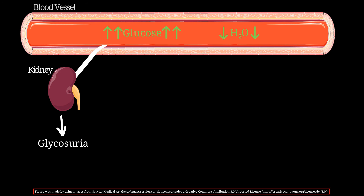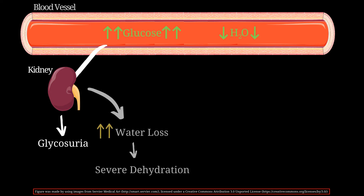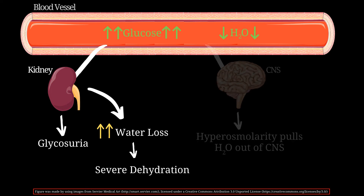Now let's look at the symptoms seen in hyperosmolar hyperglycemic state. Glucose gets filtered out by the kidneys into the urine, causing glycosuria. On its way out, glucose pulls water with it, which reduces total bodily fluids and causes dehydration that further worsens the hyperosmolar hyperglycemic state.